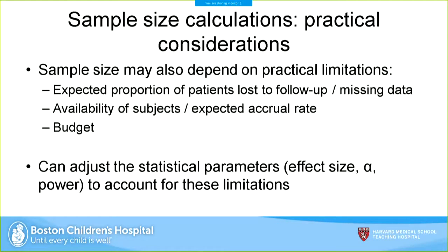Aside from statistical parameters, there are also practical limitations to sample size. Consider how many patients you expect to lose to follow-up or have missing data — you may need to accrue more subjects so that after removing missing data you still have the appropriate sample size. Sample size may also be limited by subject availability, slow accrual rate, and study budget. Sample size calculation is more of an art than a science — you have to talk to the investigator, figure out the limitations, and find the right balance between having enough subjects and running the study in a practical, time-efficient manner.